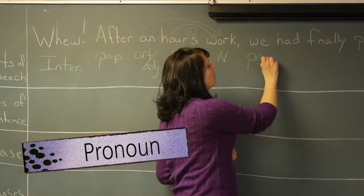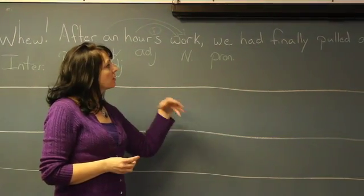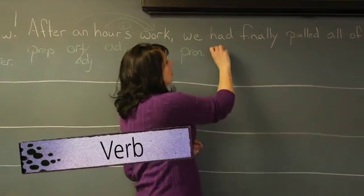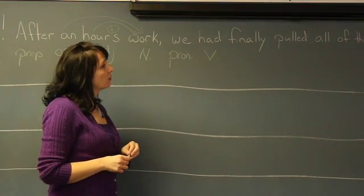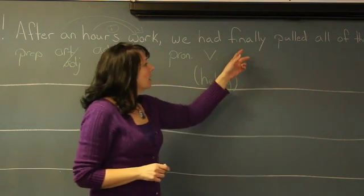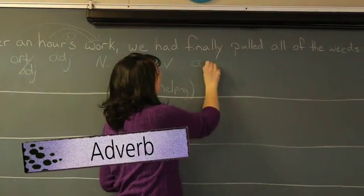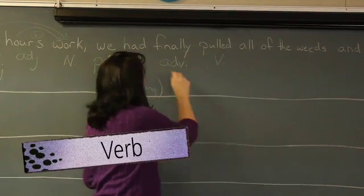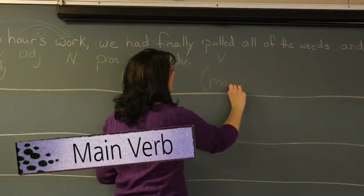'We' is a pronoun. Pronouns are a finite set — we have first, second, and third person pronouns, singular or plural. 'We' is a first person plural pronoun. 'Had' is a verb, but in this case it is actually helping another verb, so we call it a helping verb. 'Finally' has an '-ly' ending, and most of the time '-ly' signals an adverb. Then we have 'pulled' — here's our other verb, and that's what 'had' is helping. So 'had pulled' together is acting as our main verb.